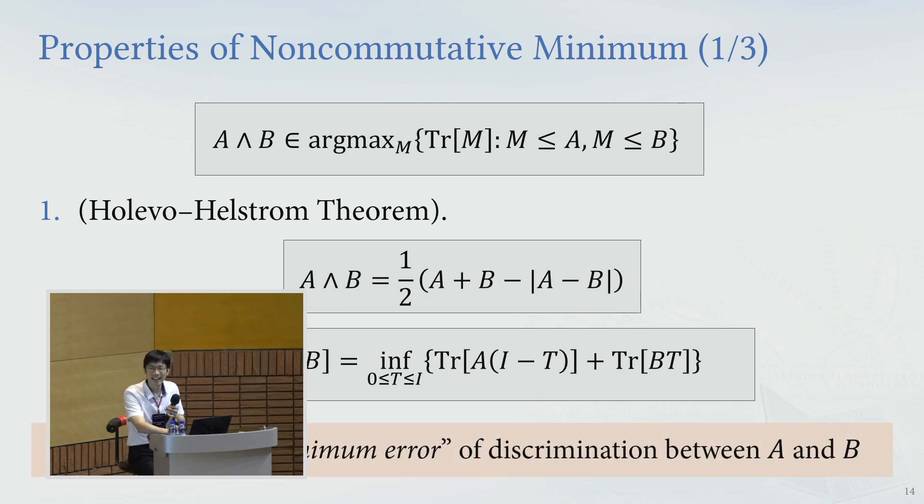So we have a nice interpretation of this trace A wedge B to be the minimum error of discrimination between operator A and operator B. Now you can see that this operator A may be like the scaled version of the state by the prior probability, and this will be the same thing.